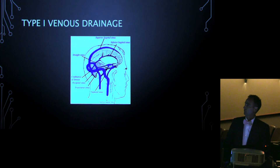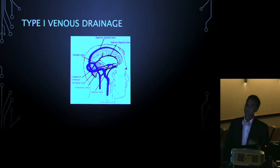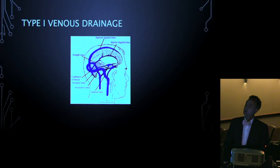Type 1 is essentially normal venous drainage: you have a sagittal sinus that splits into the transverse sinuses, which go to the sigmoid sinuses, then to the jugular veins. In those cases, the back of the head has nothing abnormal, so you don't have to worry during the exposure and the dural opening is usually straightforward.